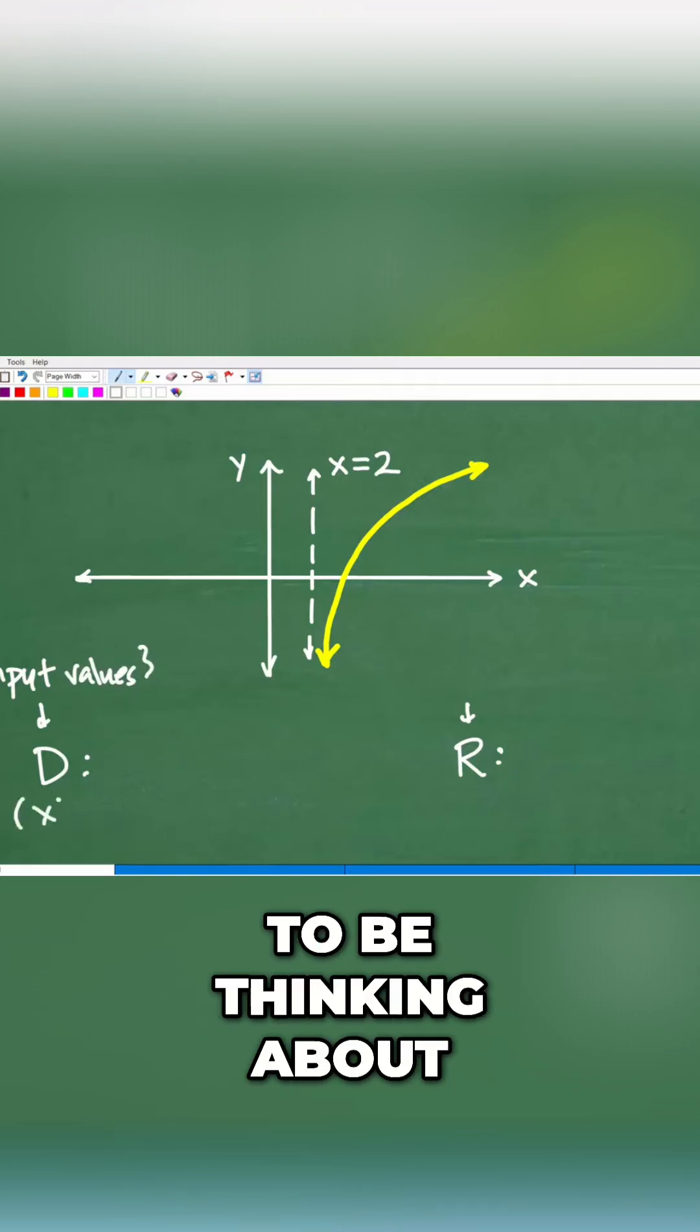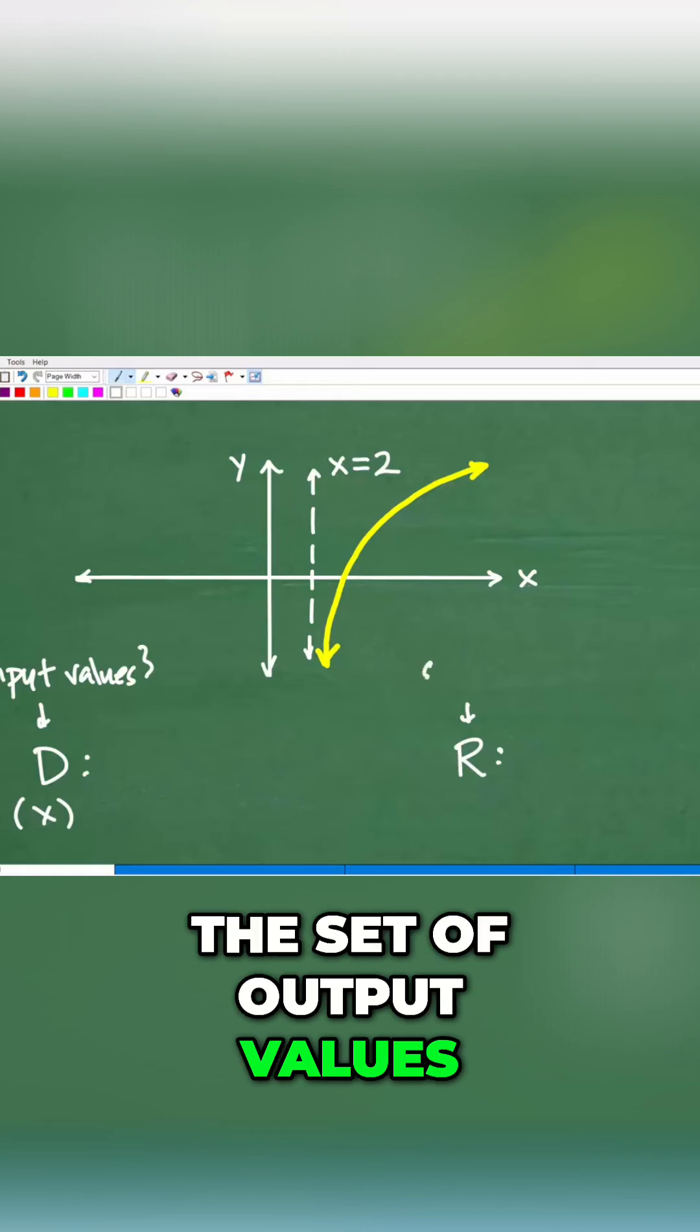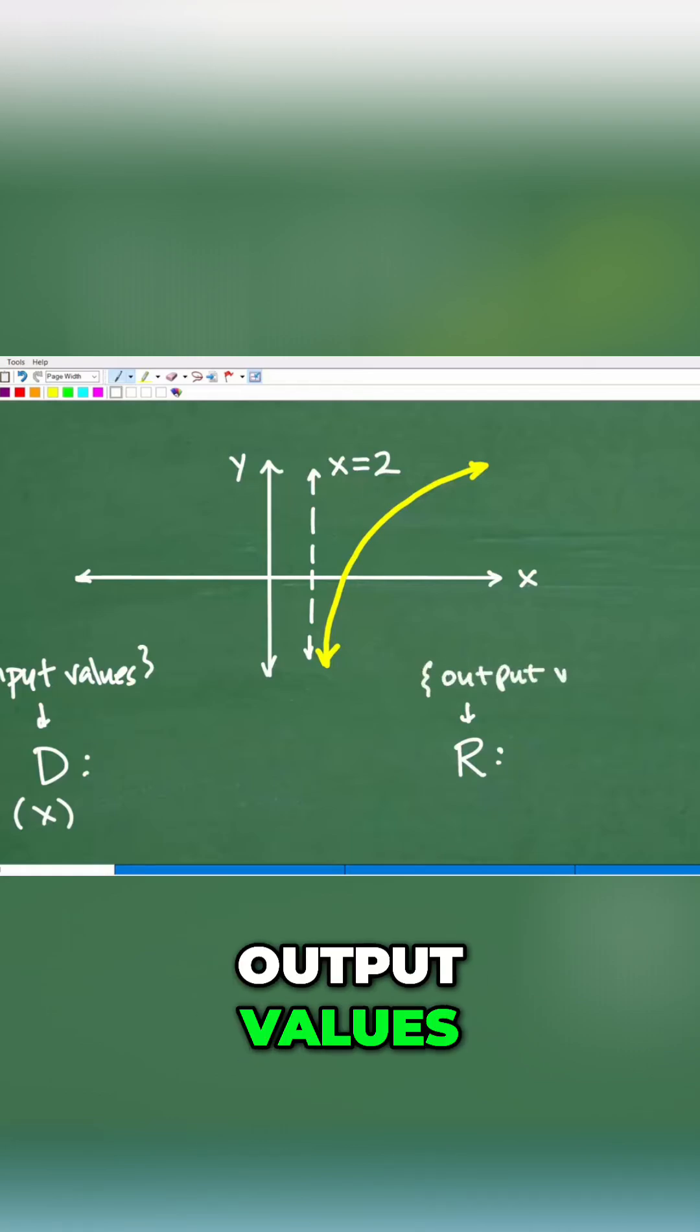And what you want to be thinking about, it's associated with the X variable. And the range is the set of output values. Let's put this here.